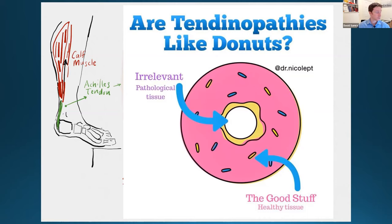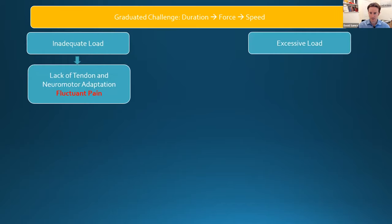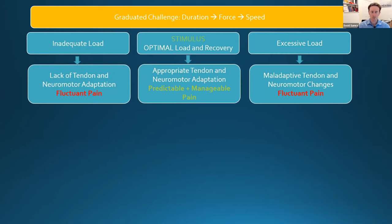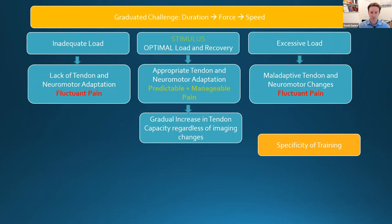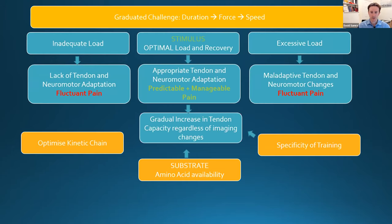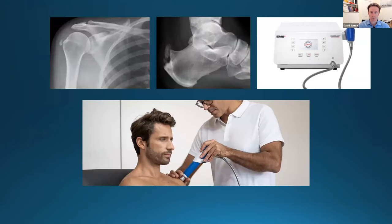I generally start patients off with simple isometric exercises, which tend to help with pain — they have less pain after doing those exercises — while also improving the strength of their tendon. Overall we want to get the right stimulus for the tendon capacity to improve: too low or too high and we get fluctuating pain; when we get the right load we get predictable and manageable low levels of pain during and after exercise. We need to make sure we treat each individual for their sport, that their whole-body movement is optimized, that they have enough amino acid substrate for recovery, and that their kinetic chain is optimized. While over 90% of patients will improve, particularly with Achilles tendon problems, if a patient can't make progress then that's the time to refer on for specialist advice.